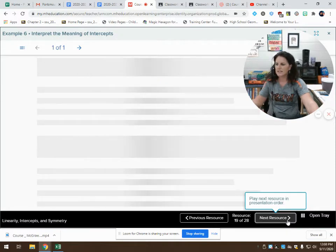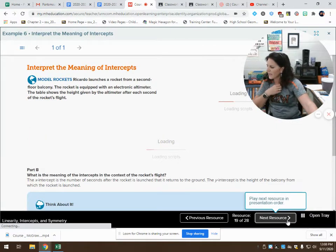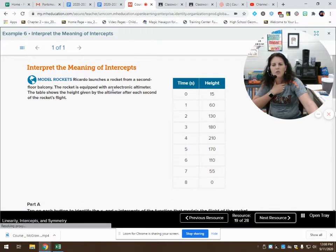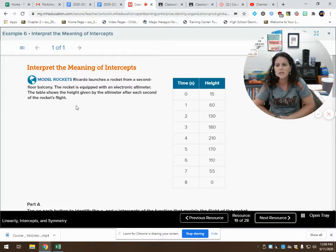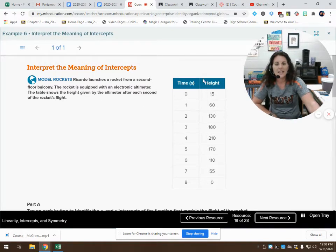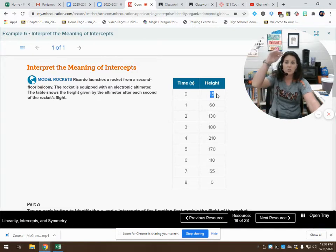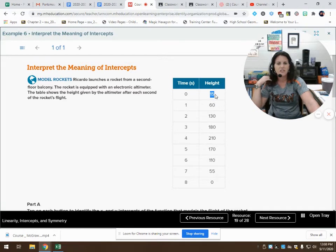Example six at the top of page 16 in your workbook. Ricardo launches a rocket from a second floor balcony. The rocket is equipped with an electronic altimeter. The table shows the height given by the altimeter after each second of the rocket's flight. So when the rocket is launched, it's a height of 15 feet. That tells me the second story of the building must be 15 feet in the air.